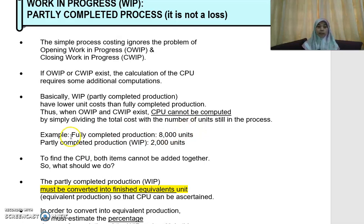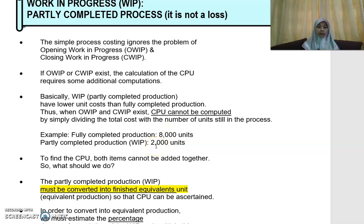For example, the fully completed production is 8,000 units and you have partly completed production of 2,000 units. To find the cost per unit, you cannot simply add 8,000 and 2,000 together to give you a total of 10,000 units — that is wrong.